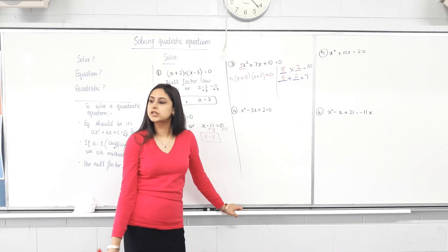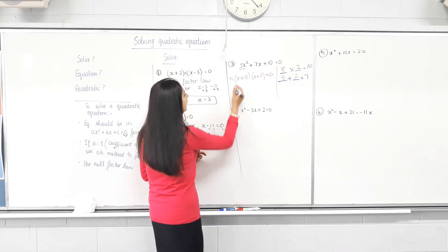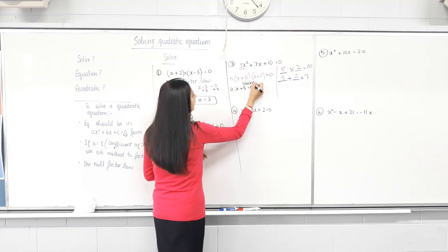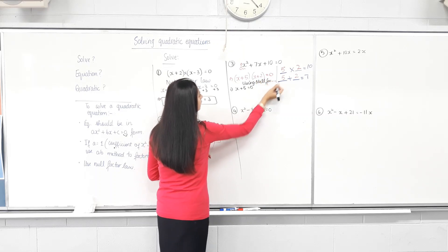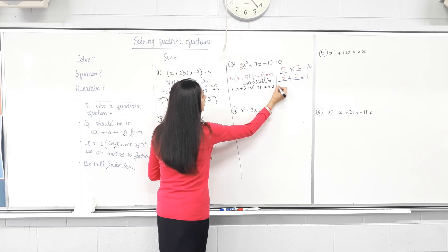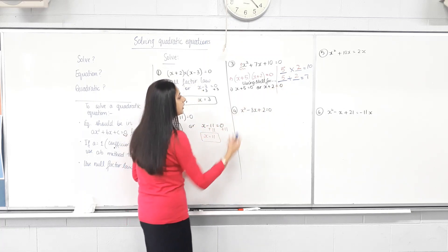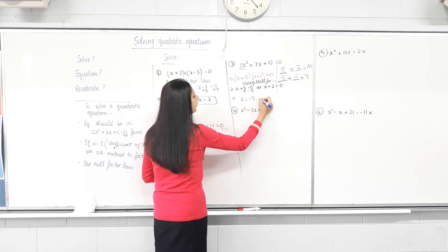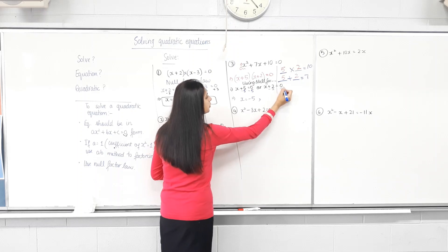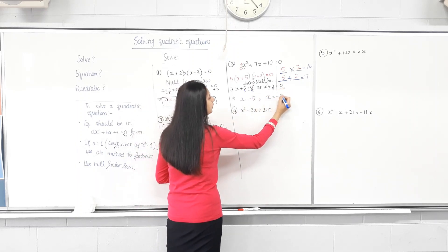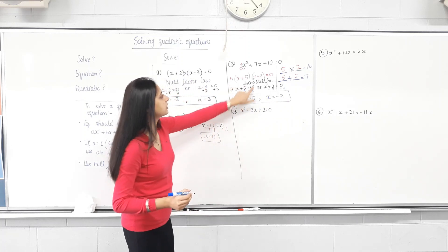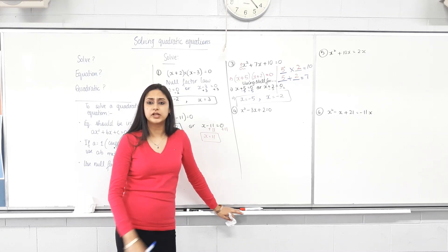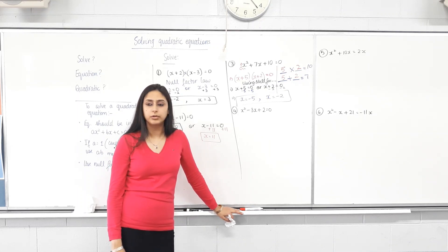Now can we use null factor law? Yes. So either x plus 5 equals 0, or x plus 2 equals 0. Minus 5 from both sides: x equals negative 5. Minus 2 from both sides: x equals negative 2. You can just see the answer — the sign just flips. We've done factorizing before — is it coming back to you?